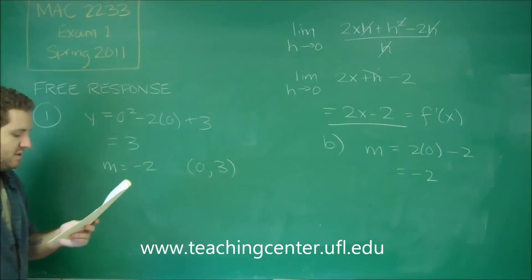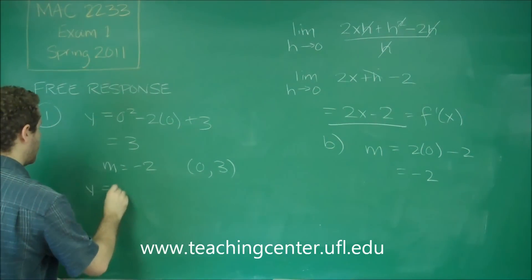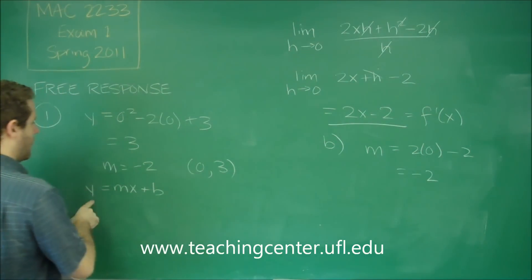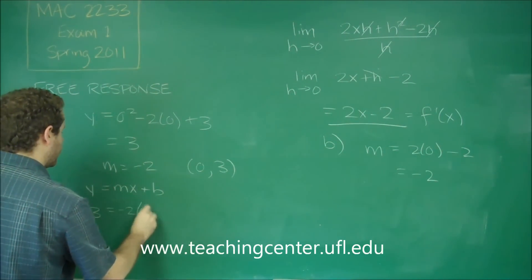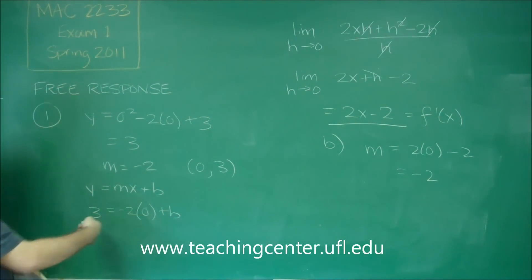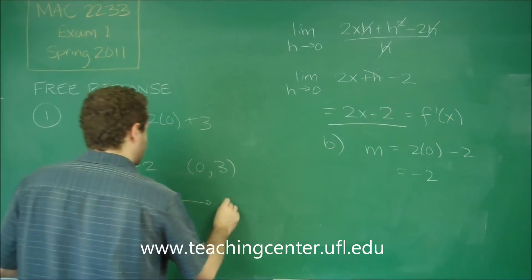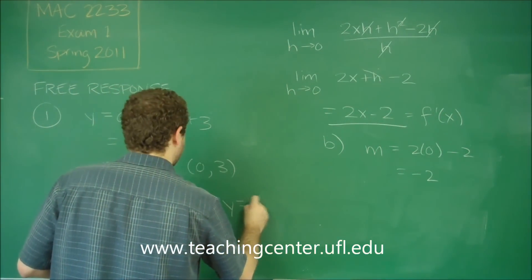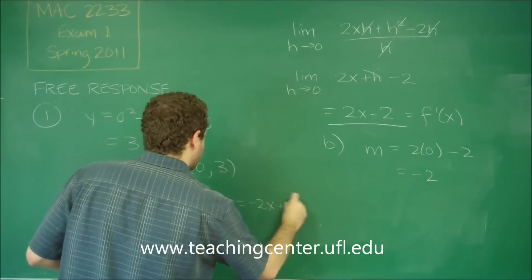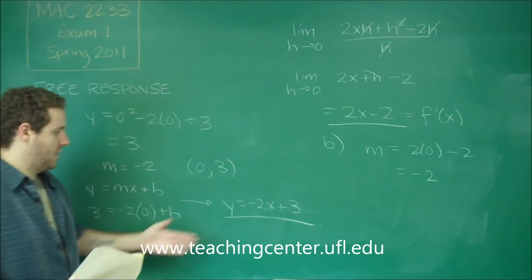So it says to just write it in slope-intercept form. We can just say y equals mx plus b. So our y is 3. Our m is negative 2. Our x is 0. So you can see there, since this is 0, b is 3. So that means our equation is y equals negative 2x plus 3, our slope and our y-intercept.